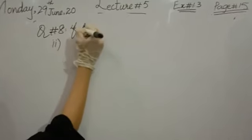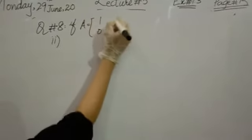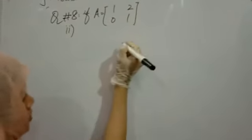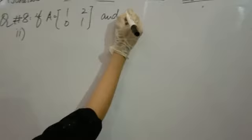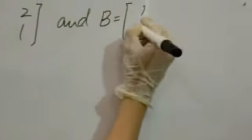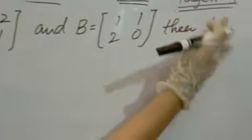If A is equals to [matrix], and B is equals to [matrix], then we have second part, part 2.